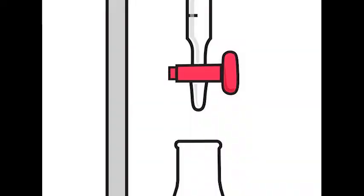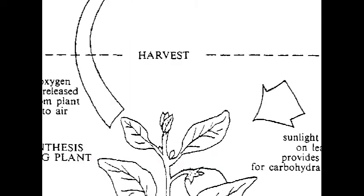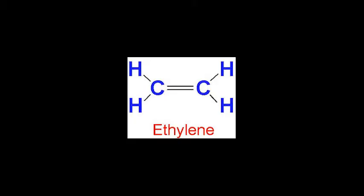For example, total soluble solids, titratable acidity, etc. And the fourth one, that is physiological methods, comprises different physiological processes being taken place in the fruit. For example, respiration and ethylene.